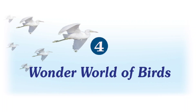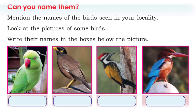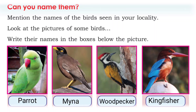Here are some pictures of birds. Can you name them? There are four different types of birds. The first one is a parrot, the second one is Indian myna, the third one is woodpecker, and the last one is kingfisher.